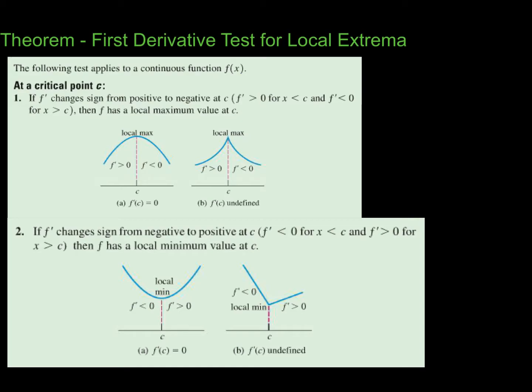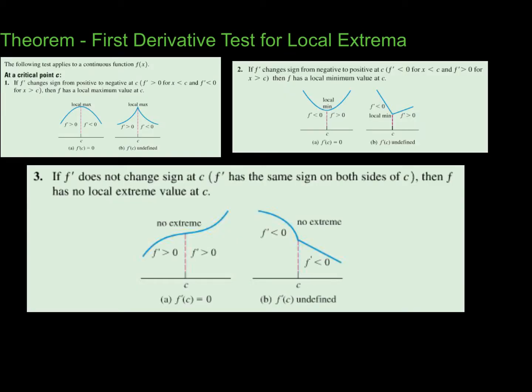Third possibility: if the derivative does not change sign at that critical point, there is going to be no local extreme value at c. The function could be increasing on both sides — derivative positive on both sides — or decreasing on both sides with derivative negative on both sides. Either way, no extreme value occurs.